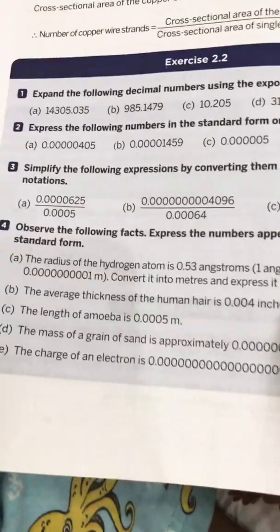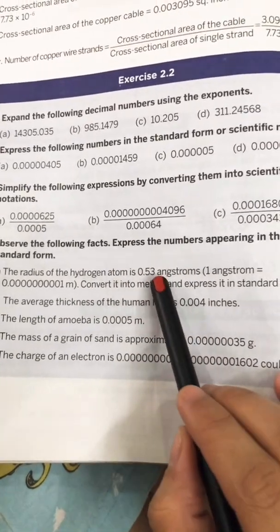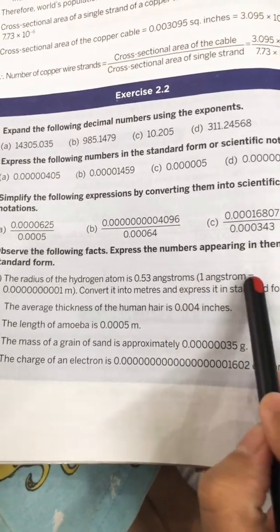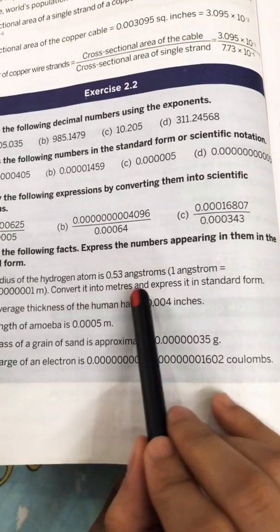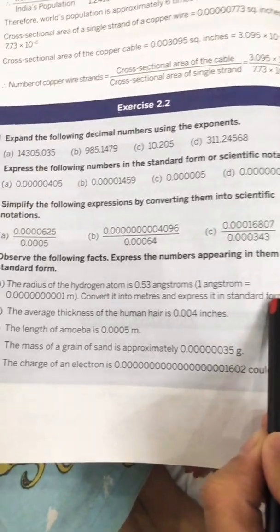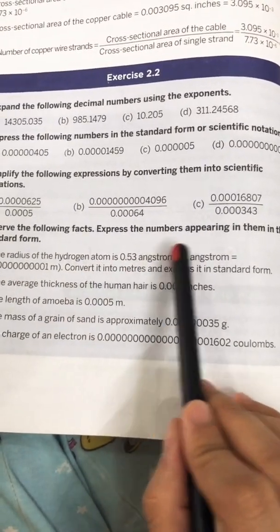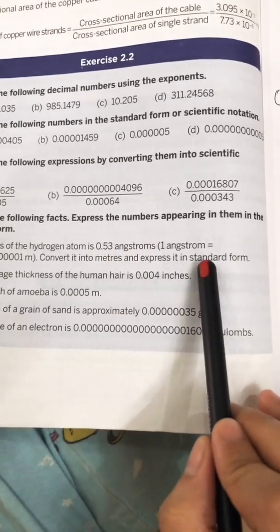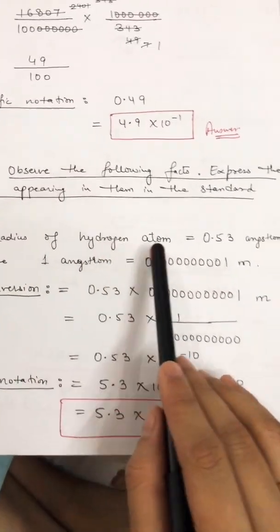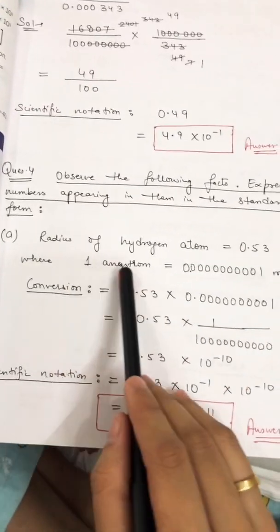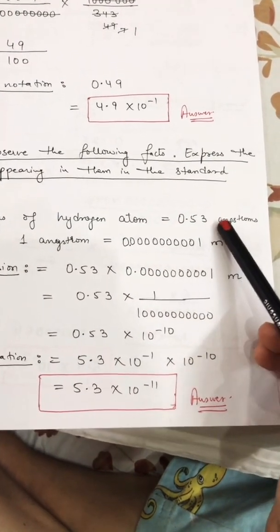Part a: the radius of the hydrogen atom is 0.53 angstrom, where one angstrom is equal to 0.0000000001 meter. Convert it into meters and express in standard form. Solution: radius of hydrogen atom equals 0.53 angstrom, where one angstrom equals 0.0000000001 meters. To convert from angstrom to meters, multiply 0.53 by 0.0000000001.